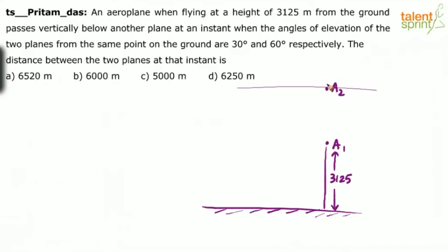At an instant when angles of elevation of the two planes from the same point on the ground are 30 degrees and 60 degrees respectively. So let's say this is the point on the ground G. The angle of elevation of these two points A2 and A1 from the ground are 30 and 60 respectively. So this is 30 degrees and this is 60 degrees. Let's assume the distance is D between these two planes.